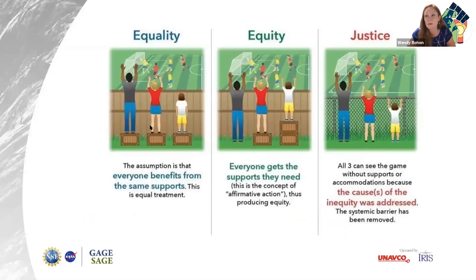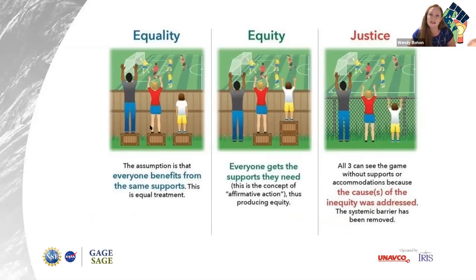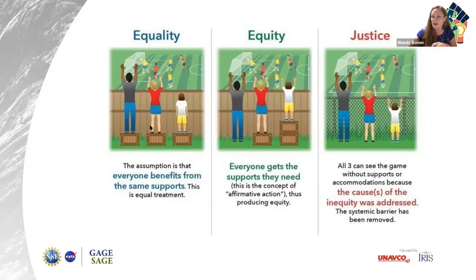Some more terms — we hear a lot about equality, equity, and justice. What's the difference? This is a simple cartoon where three people are trying to watch a soccer game. Equality assumes everyone benefits from the same support — all people get a box — but the smallest person still can't see the game. When we improve that by giving everyone the supports they need, that produces equity. We can go a step further toward justice, which is taking away the cause of the inequity itself — removing that systemic barrier. If we remove the fence entirely, that would be more like liberation. We want to be aiming for justice and liberation.